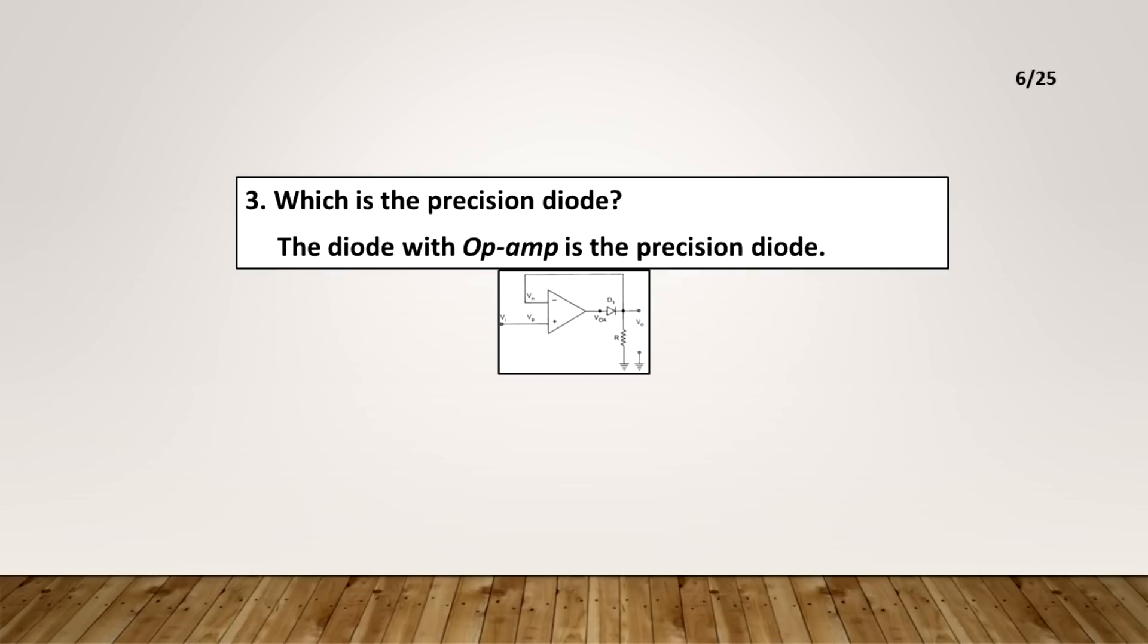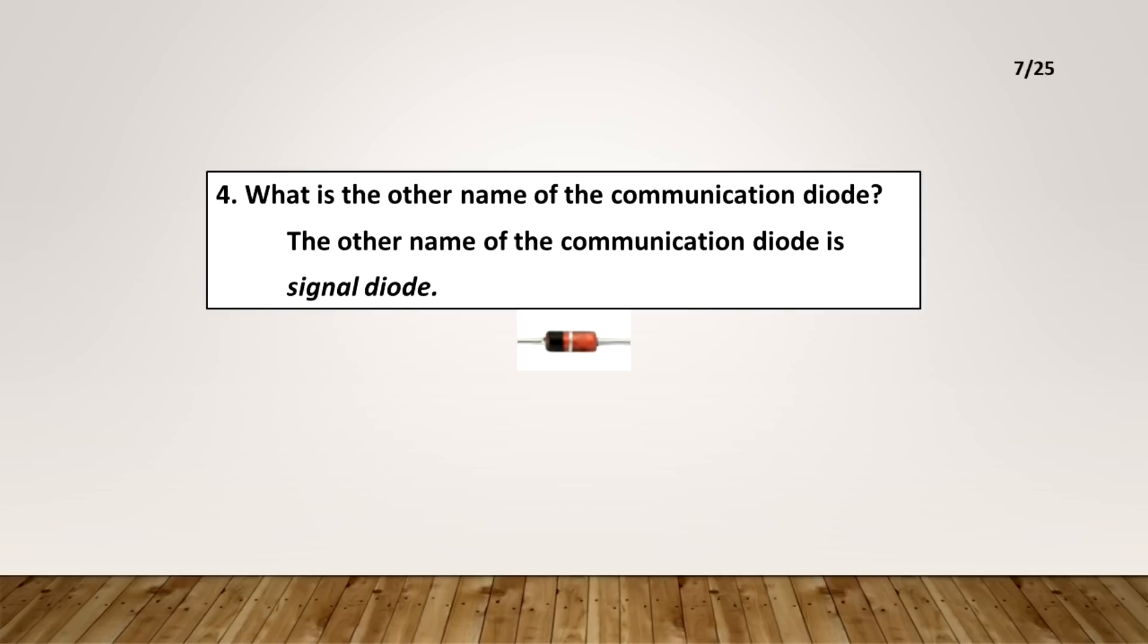What is the precision diode? The diode with op-amp is the precision diode. What is the other name of the communication diode? The other name of communication diode is signal diode.